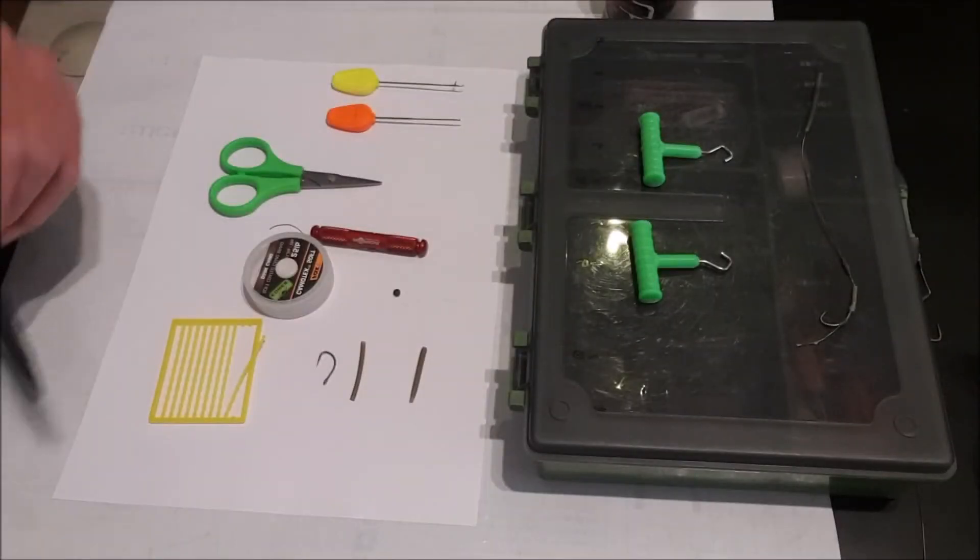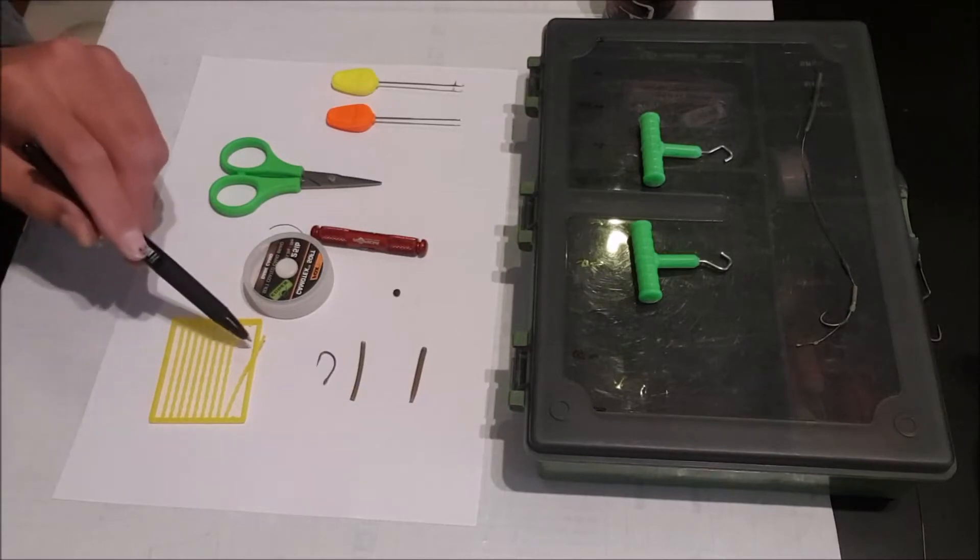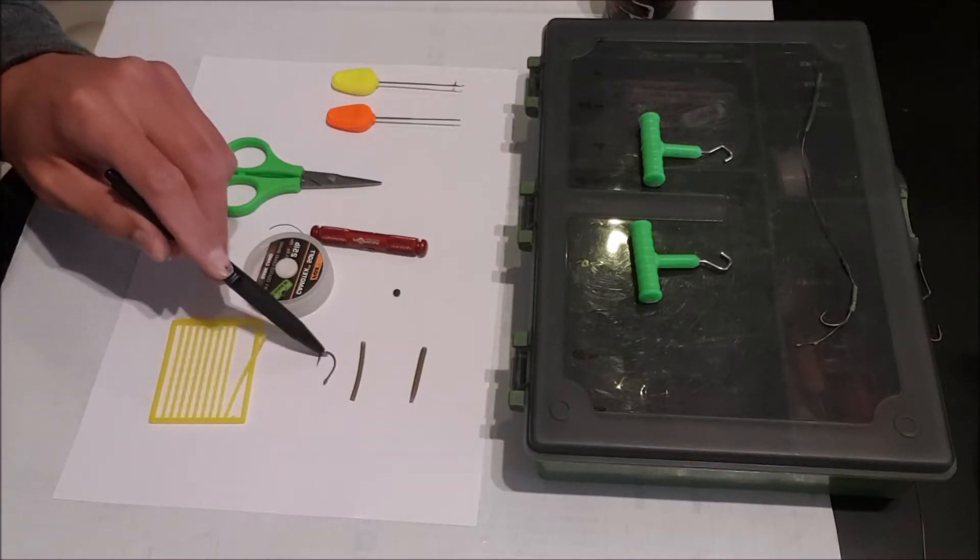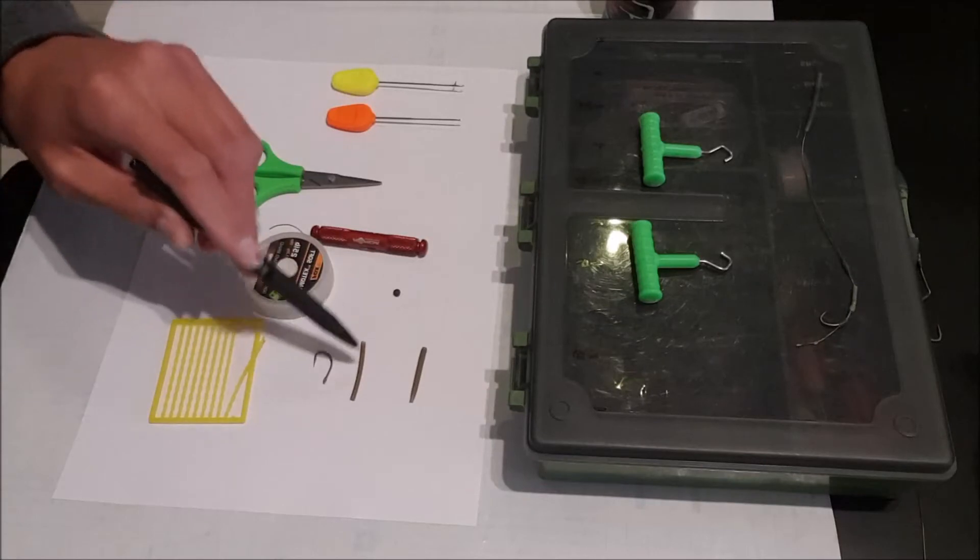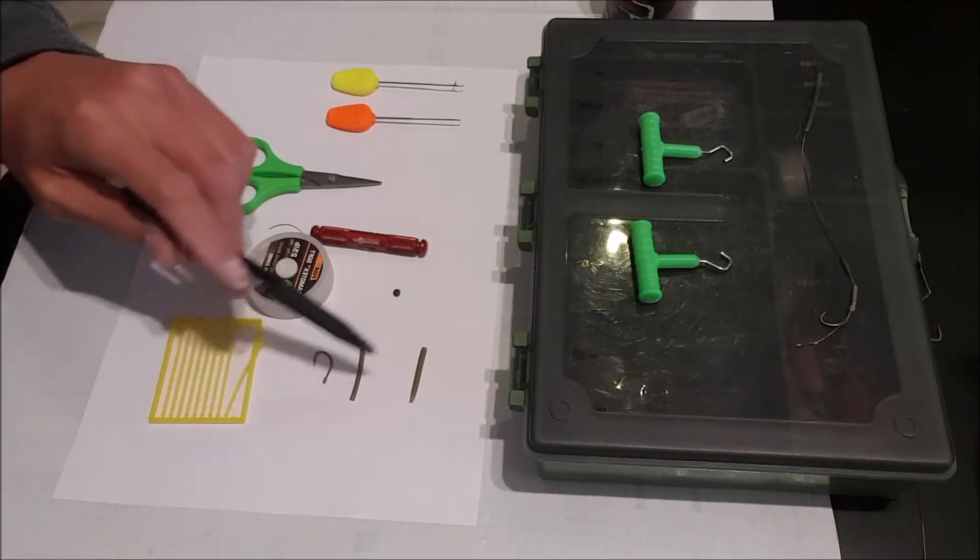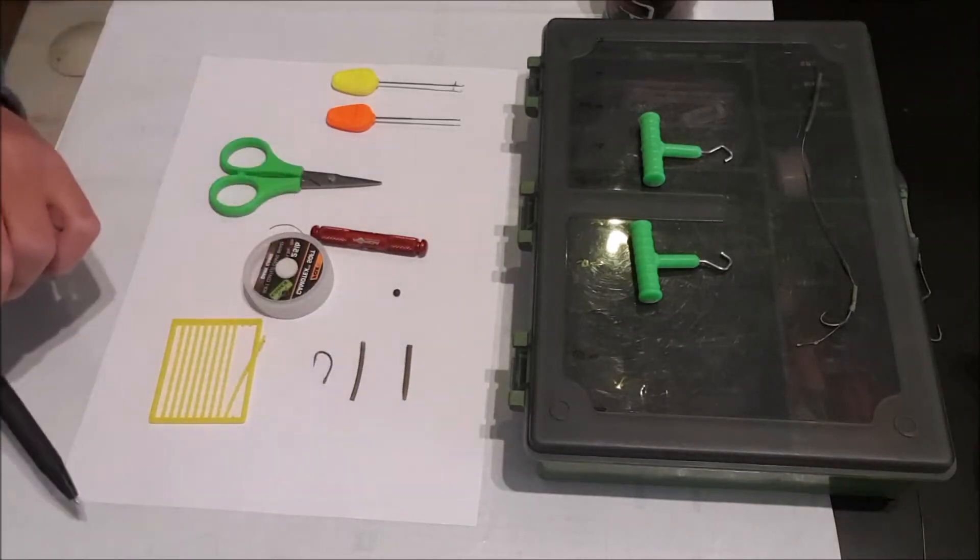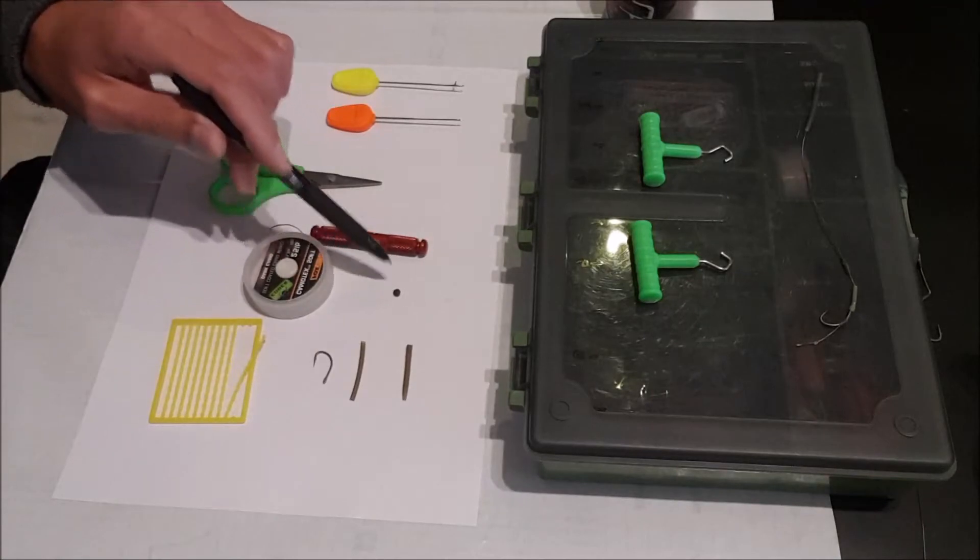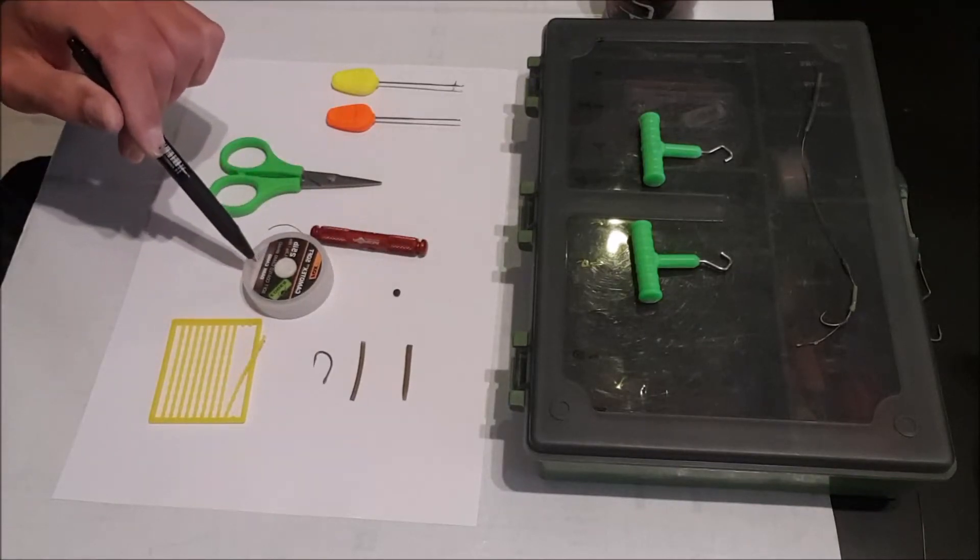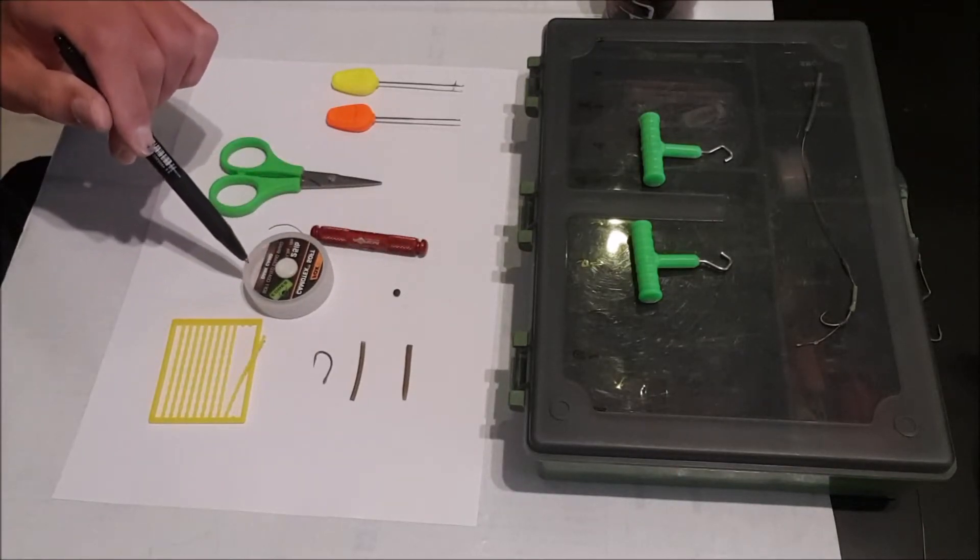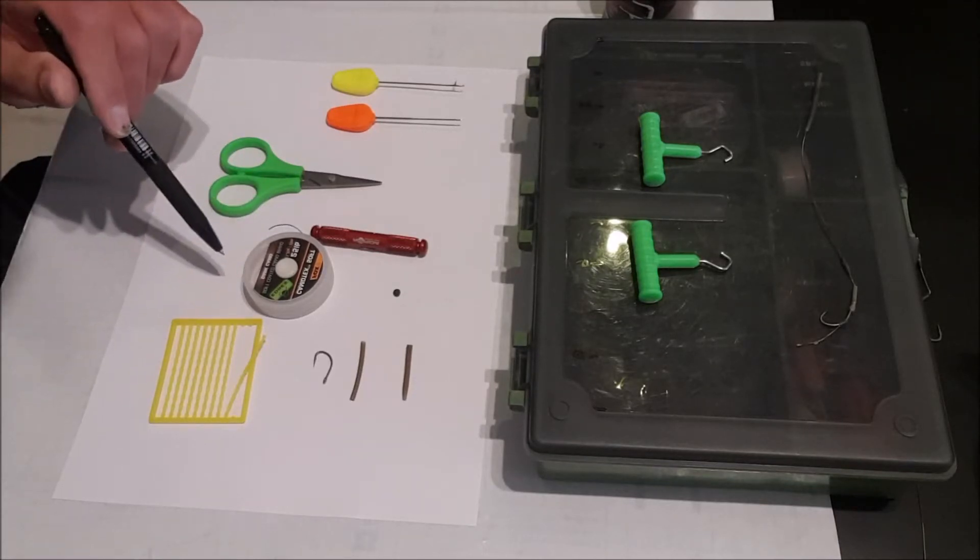So these are the things I used to tie on my rigs with. Boilie stop, I have a size 5 short curve, some shrink tube, an anti-tangle sleeve, tungsten putty, my hook link material which I'm using 25 pound Kamatec soft but you can use whatever you prefer.